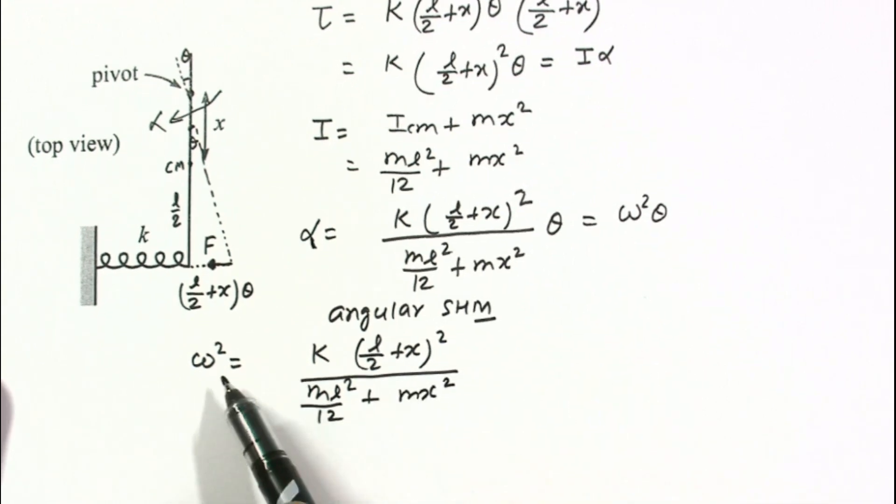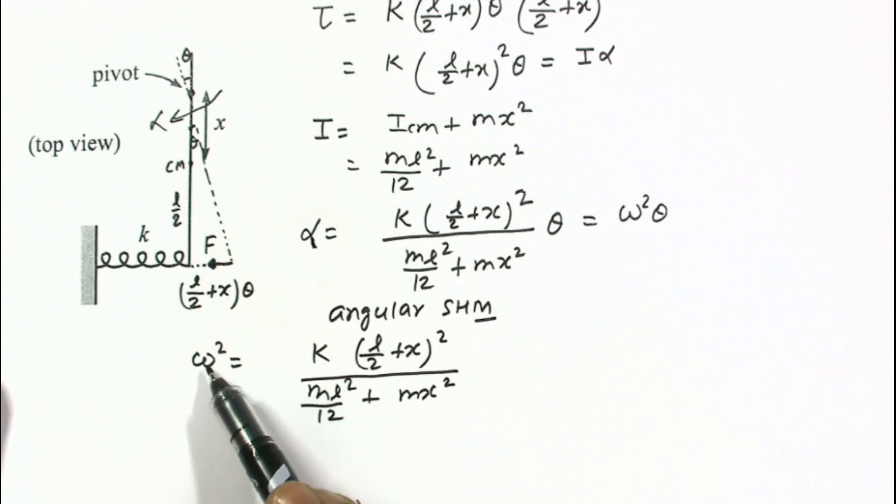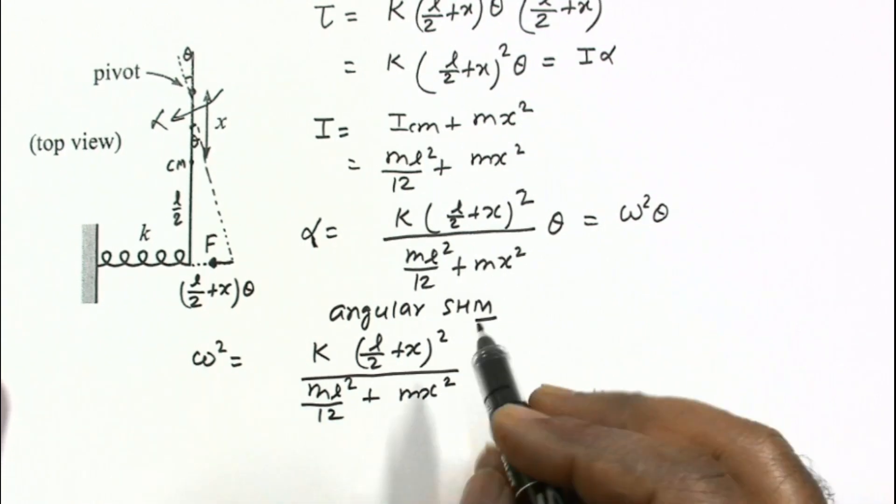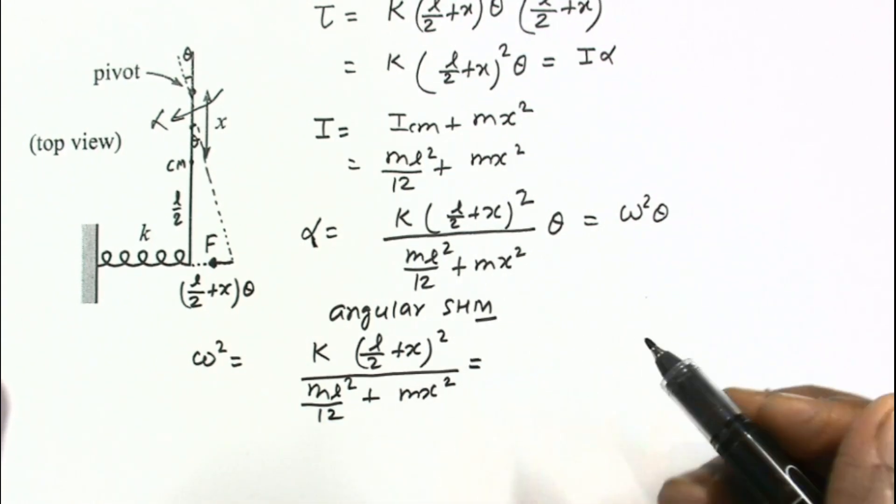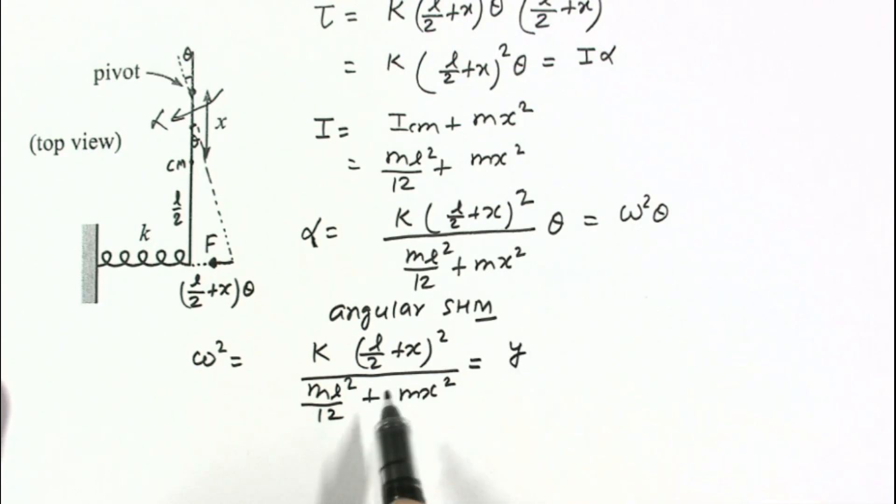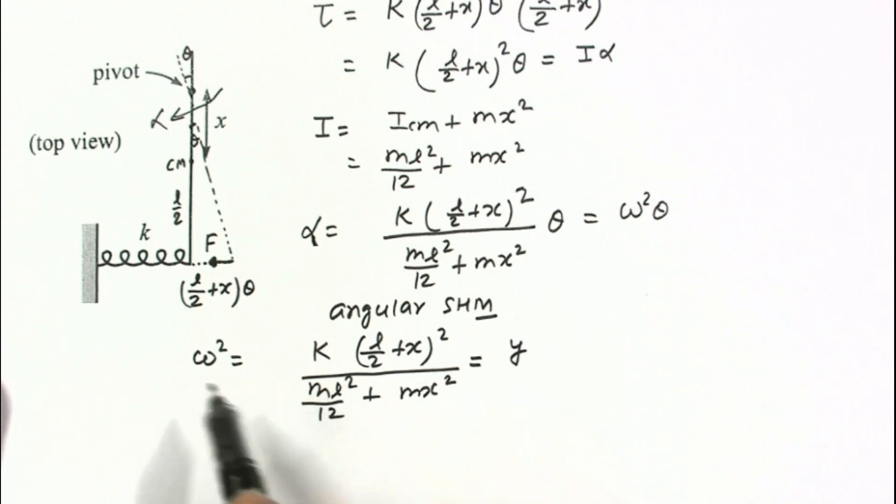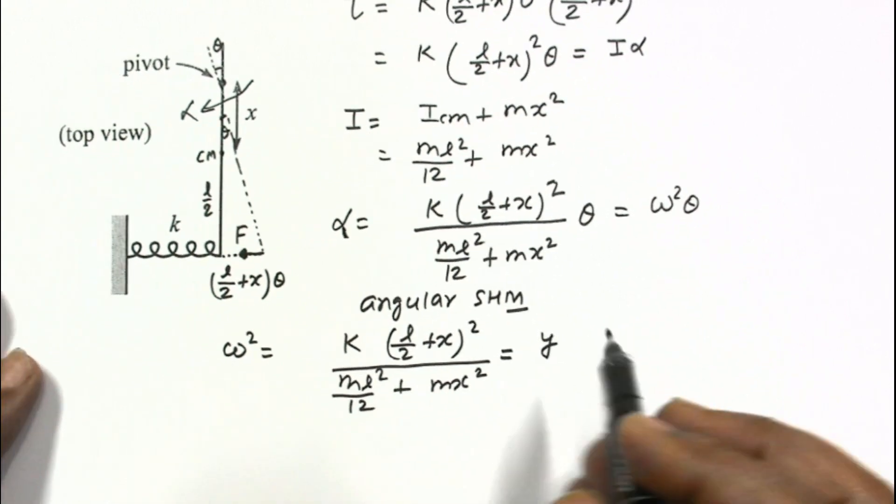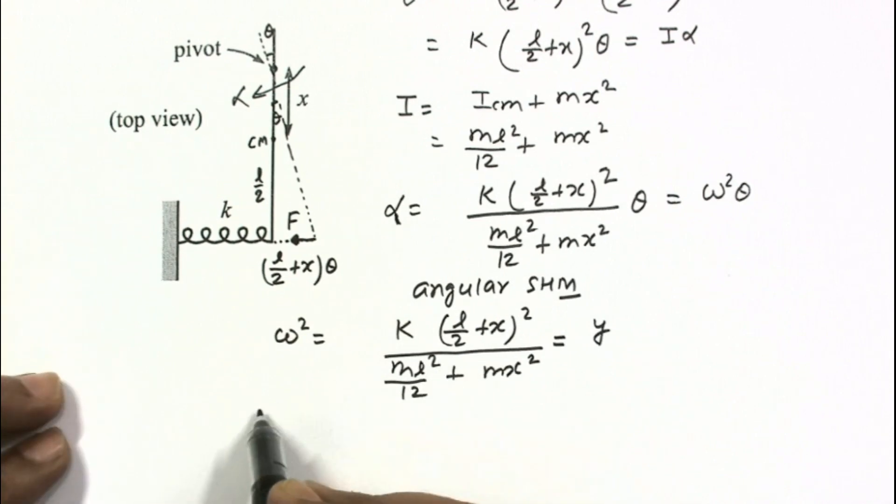We have to maximize this omega. And if omega is maximum then omega squared is also maximum. I am taking this function as some Y. So differentiate this expression and put it equal to 0. I am differentiating it as dy by dx.